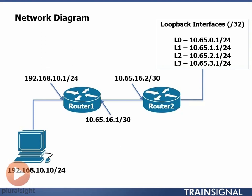A loopback interface is a virtual interface — an interface on the router that exists only on the router. This is kind of like a VLAN interface on a switch. Just as we configured a VLAN interface on a switch so we could telnet or SSH to it, we can create a loopback interface on the router. We put an IP address on it, and it can respond to pings. Loopbacks don't ever go down, and they only have a single IP address, because there's no other place to connect another device — it's a virtual interface that exists only on the router.